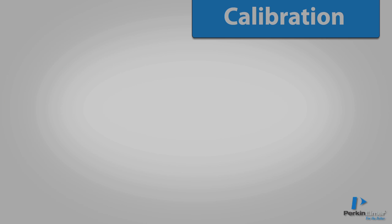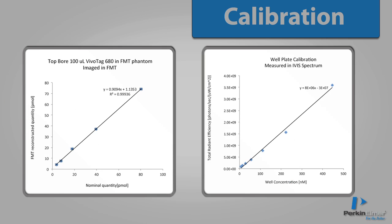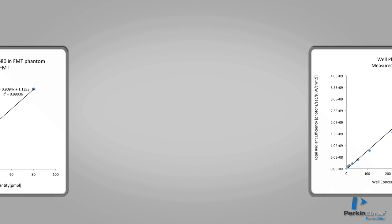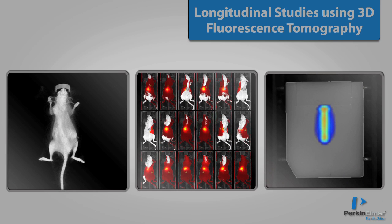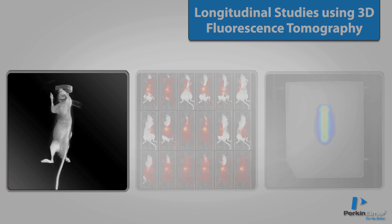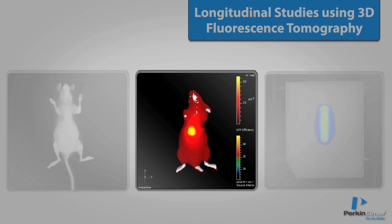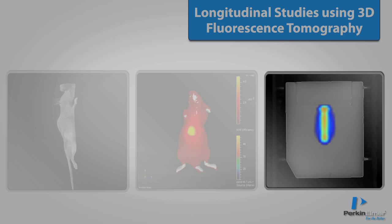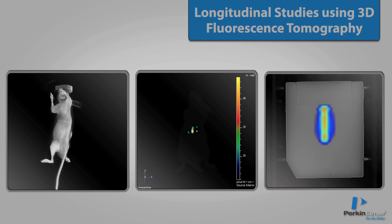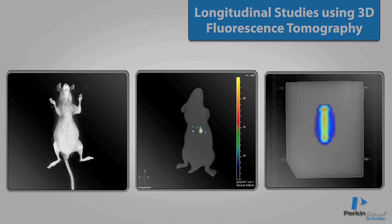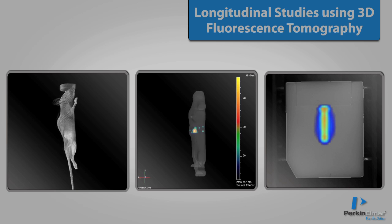Both methods result in a linear relationship relating concentration of fluorophore to signal intensity. The components of 3D fluorescence tomography — surface topography reconstruction, transillumination, and calibration — are what make in vivo longitudinal quantitative fluorescence studies possible.